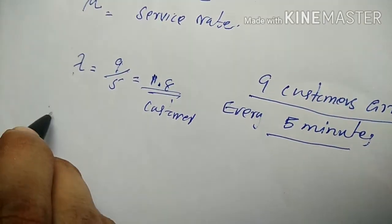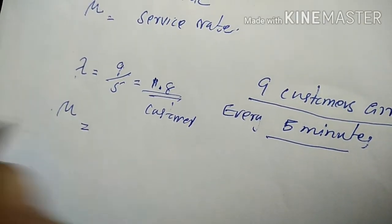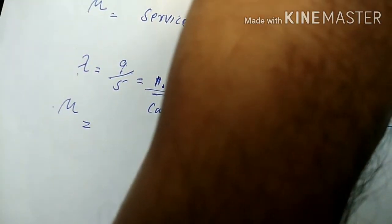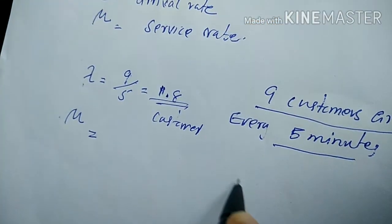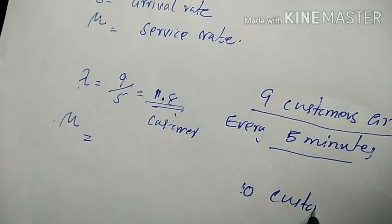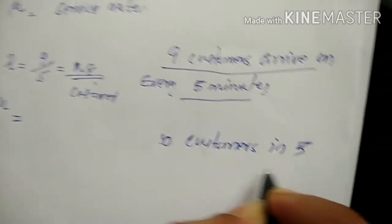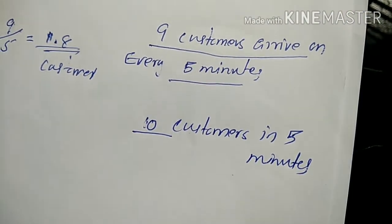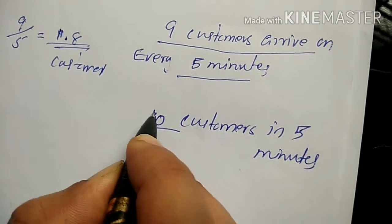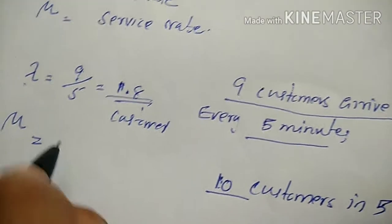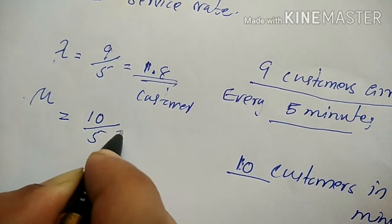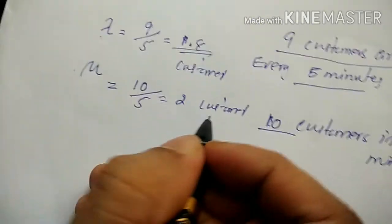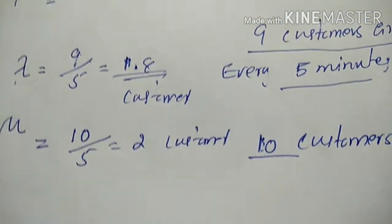Next, we find mu, the service rate. The cashier can serve 10 customers in five minutes. So service rate per minute is 10 divided by 5, which equals 2 customers per minute. Therefore, mu equals 2 and lambda equals 1.8.